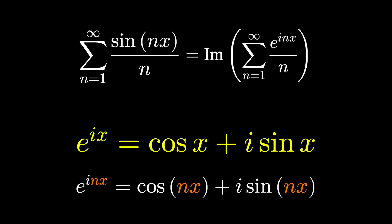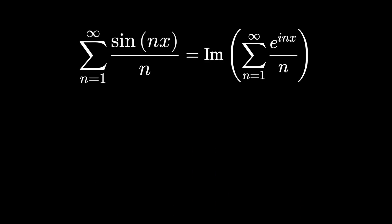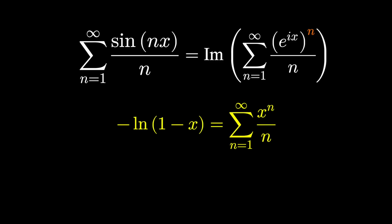And you might say, okay so what, we've just changed one series for another. However, this time with the n in the exponent, rearranging things slightly looks like a fairly well known power series. In fact this is the Maclaurin series representation of natural log of 1 minus x just with e to the ix substituted in. So the imaginary part of this series is negative the natural log of 1 minus e to the ix.